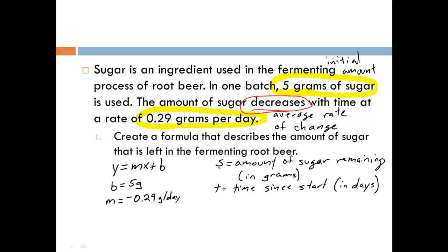So s is your y. S depends on t. So we're going to have y or s equals m, which we know is negative 0.29 times x, which in this case we're using t, plus b, and we said that b was 5 grams. So this is our formula that describes the amount of sugar that's remaining.